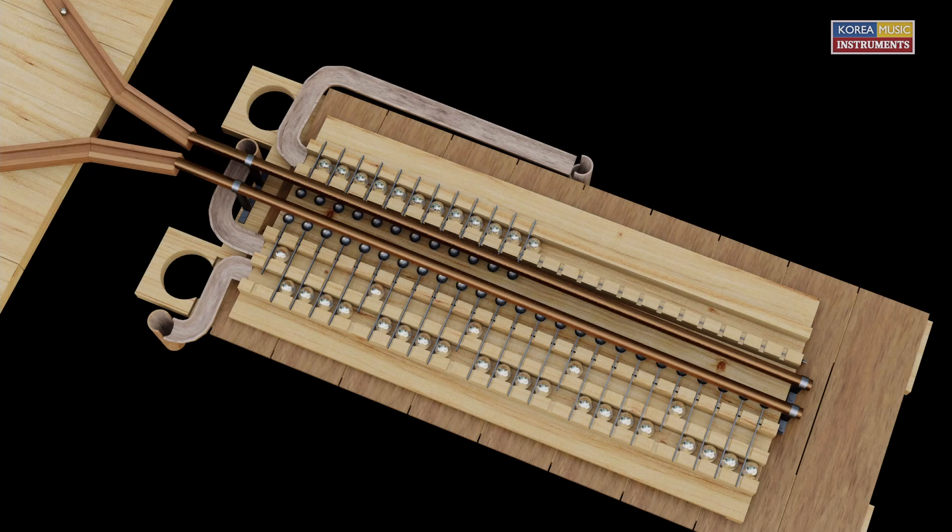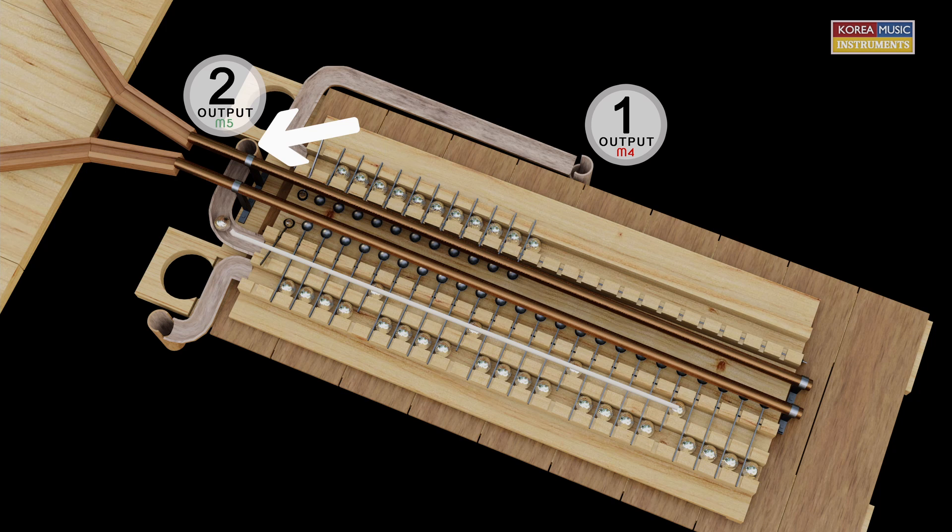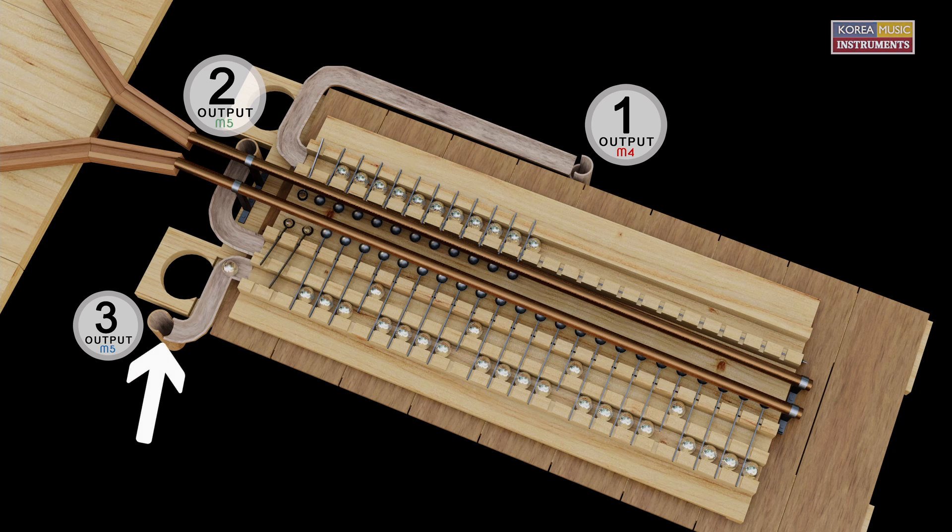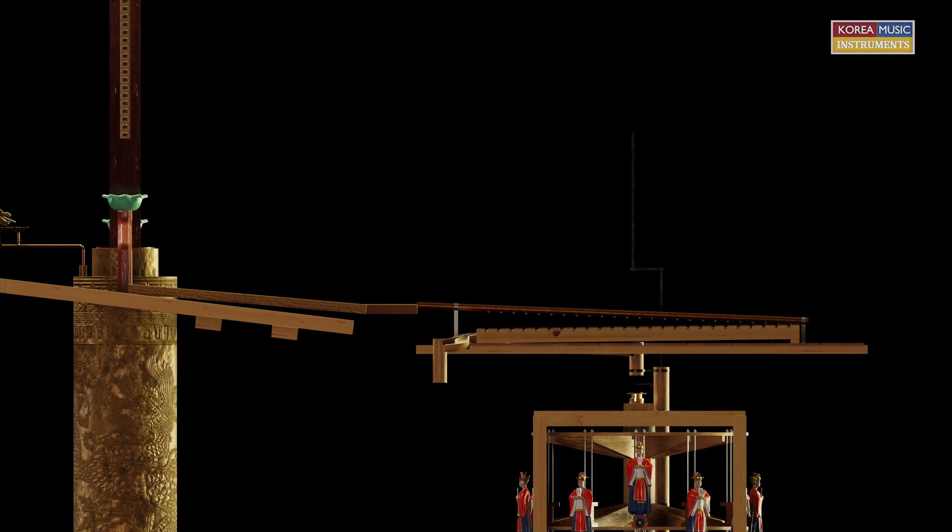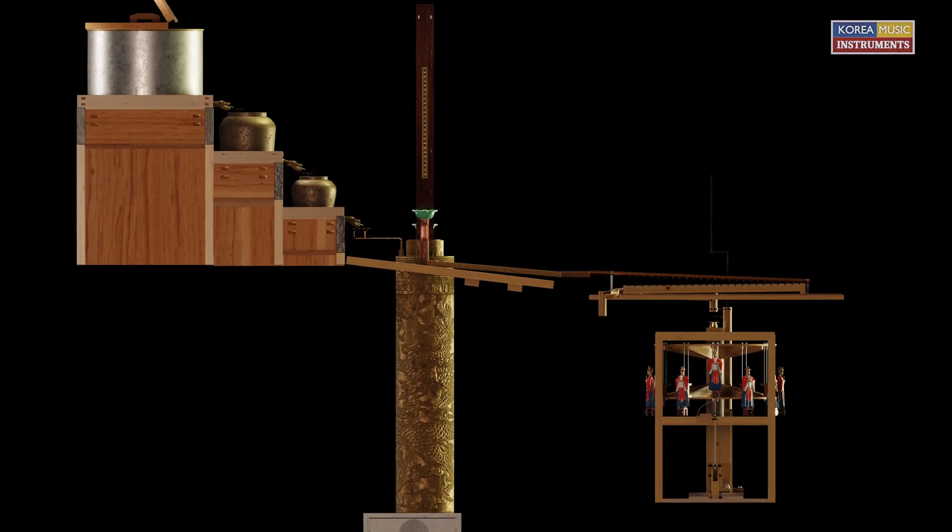The power converter has 3 outputs. Output 1: balls roll to module 4, 12 balls. Output 2: balls roll to module 5, tower 1, 5 balls. Output 3: balls roll to module 5, tower 2, 20 balls.